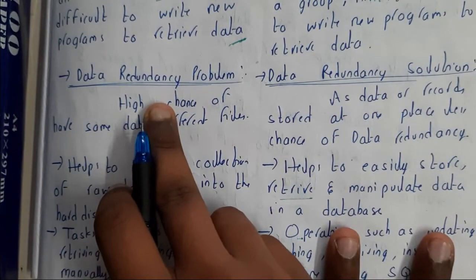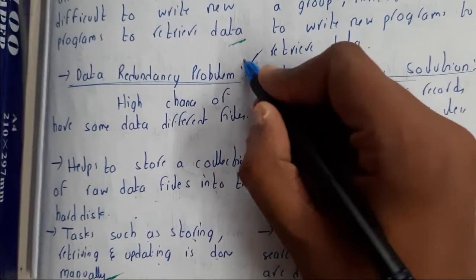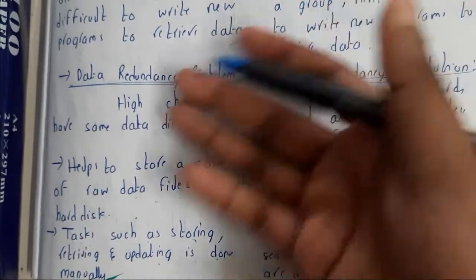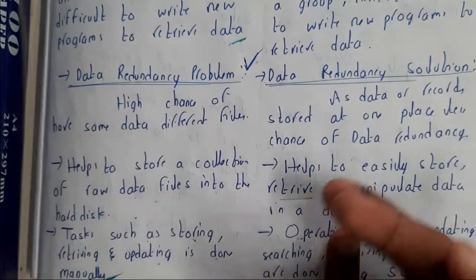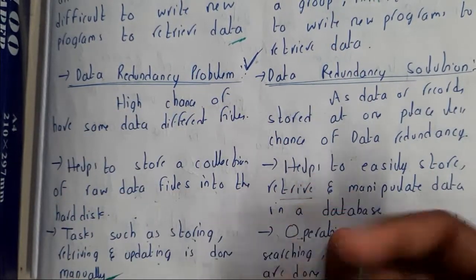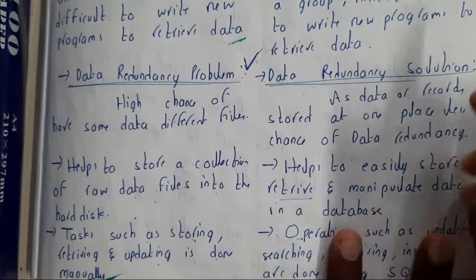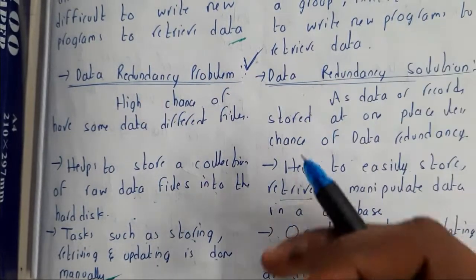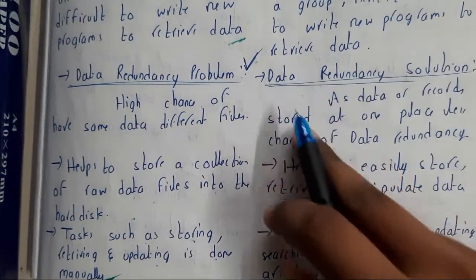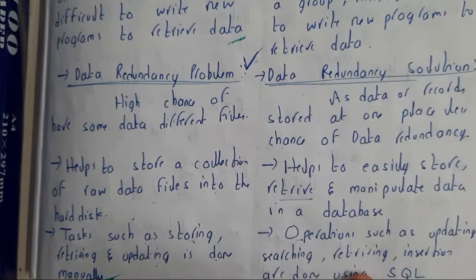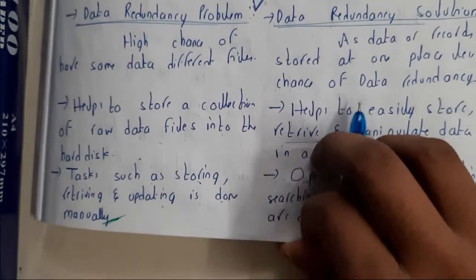There is a problem of data redundancy in file system — we may have multiple copies of data with no restriction. Whereas in database system, we can apply conditions like constraints to decrease redundancy. We will be learning about reducing redundancy through normal forms and normalization.